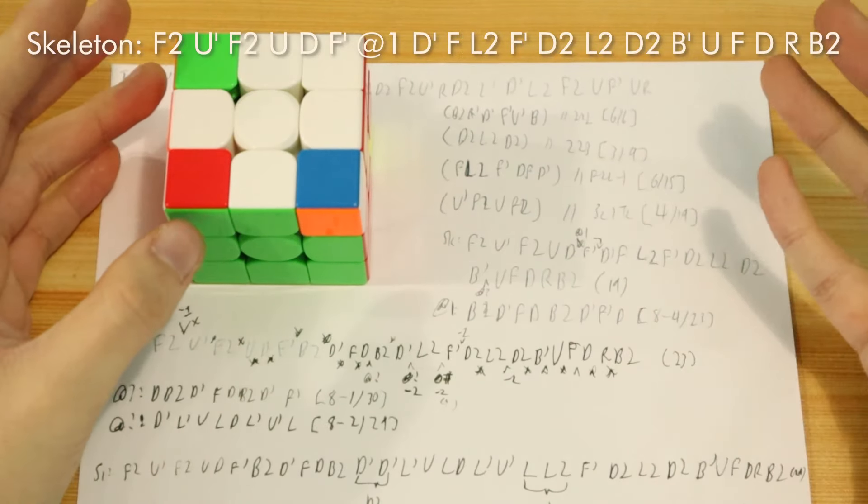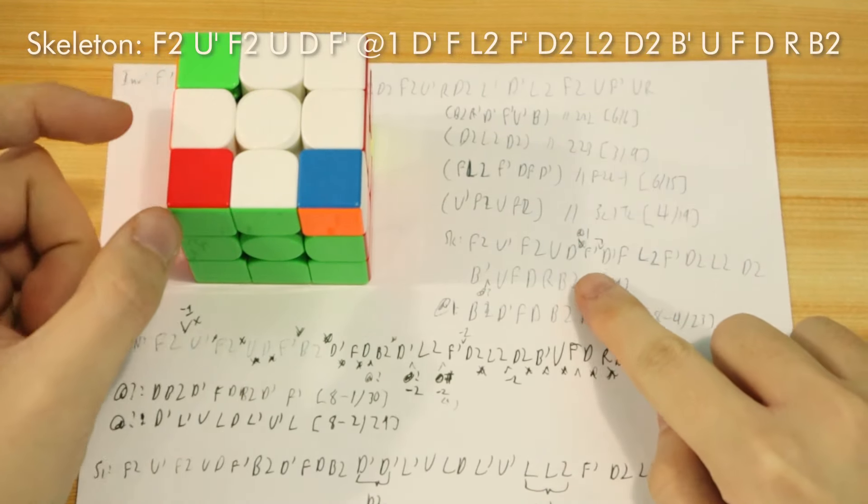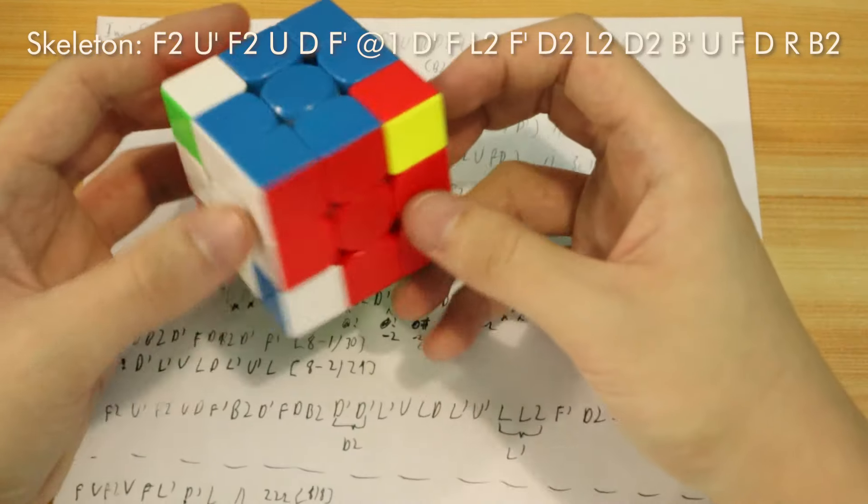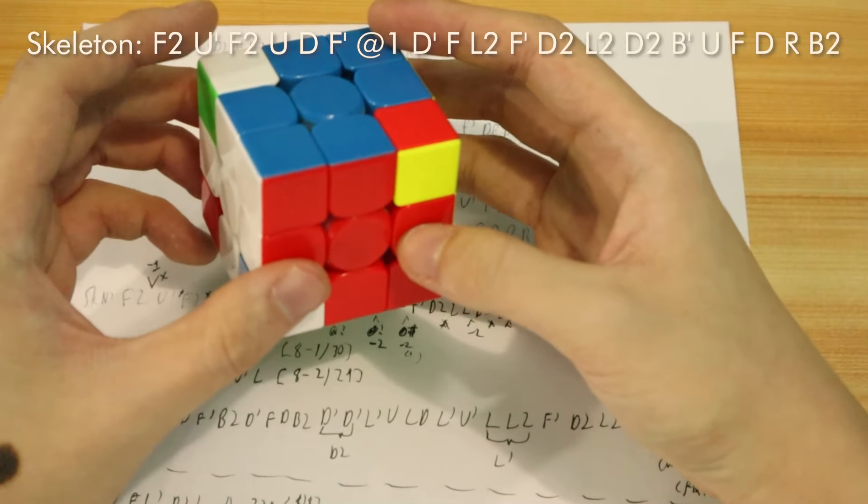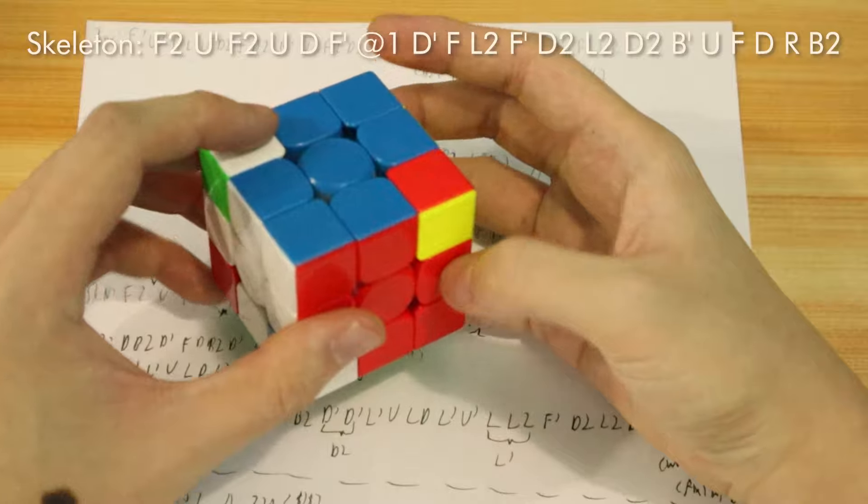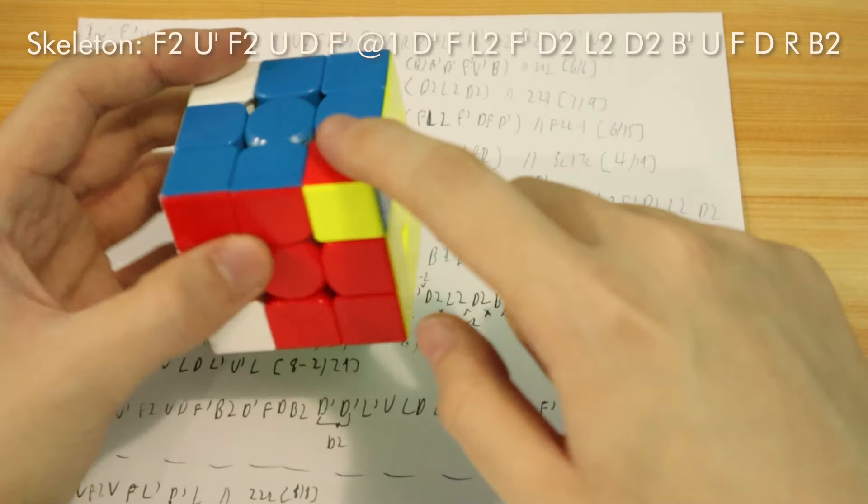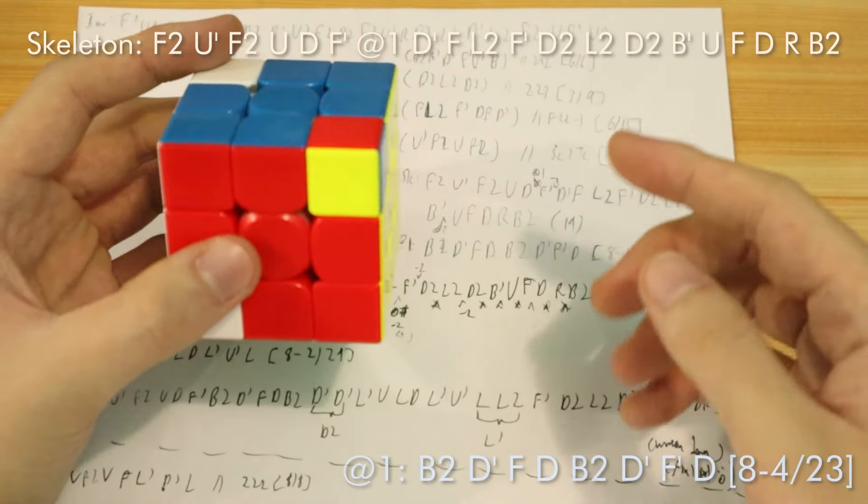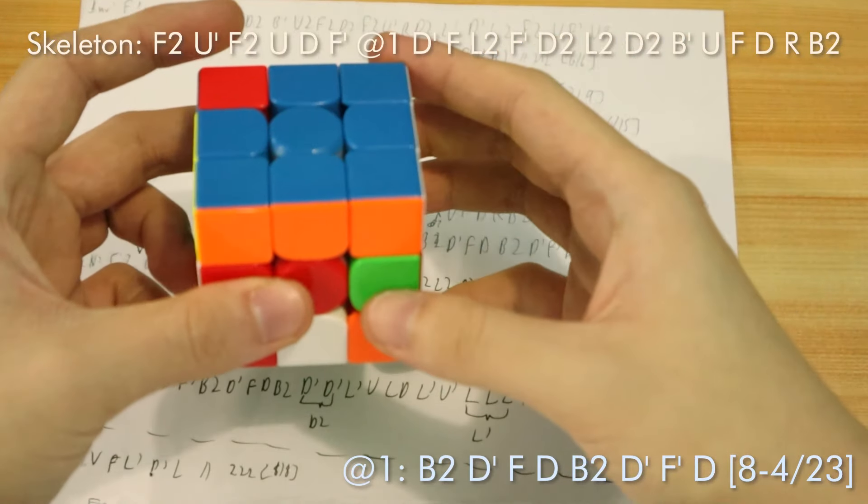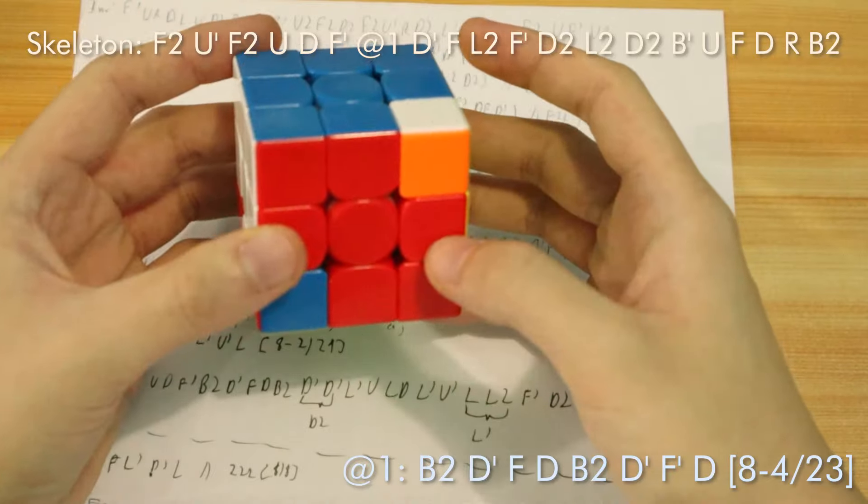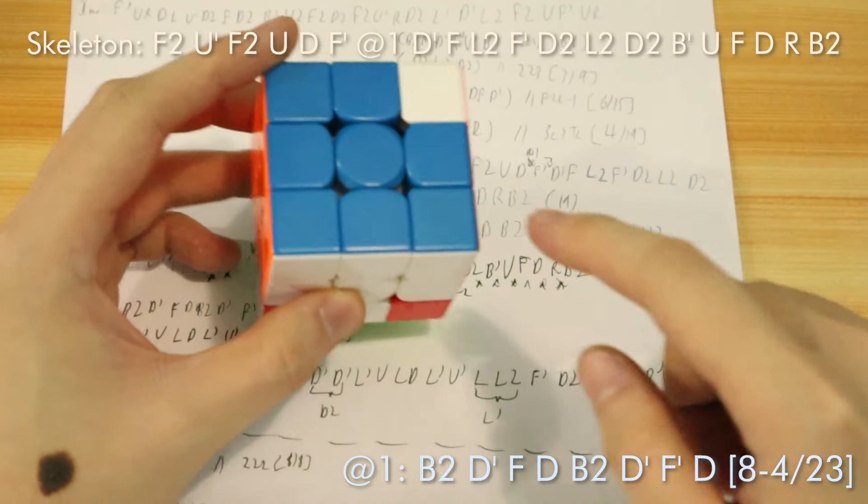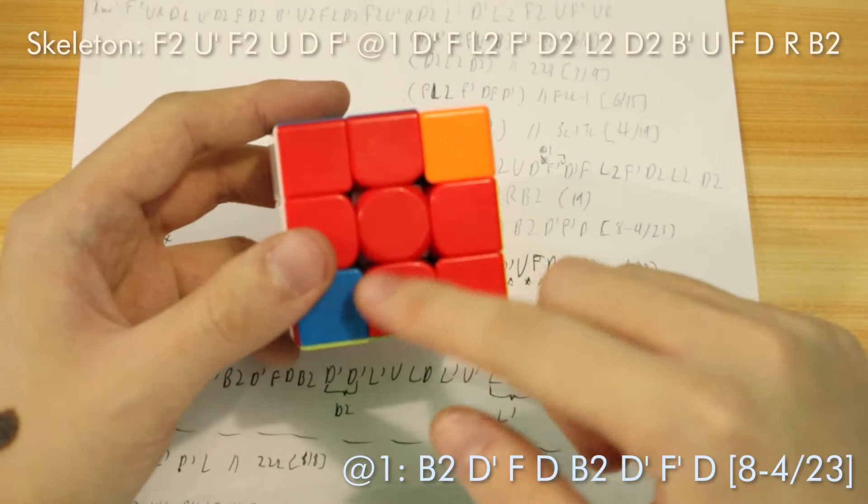And so I decided to check the spot in between this F' and D' in the solution. And I actually found that on this orientation, I could actually insert this corner to here and interchange it with this twisted corner. So that was a D2, D' FD, then reverse those. And that ended up solving the corner as well as taking the twisted corner out.